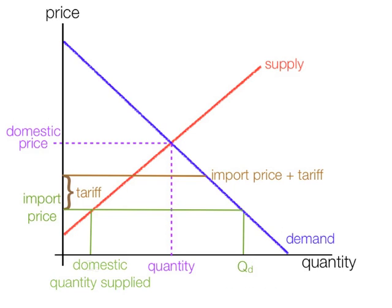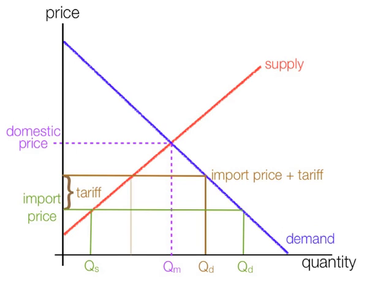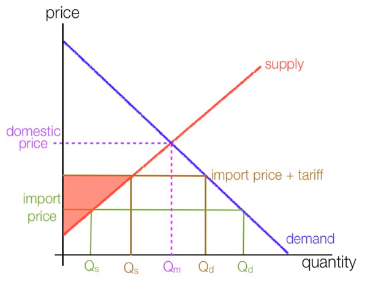I'm going to pick that quantity demanded QD and quantity supplied QS. The import price with the tariff gives a new quantity demanded and a new quantity supplied. Initially, that's the producer surplus before imports. After imports it falls dramatically, and the tariff causes producer surplus to rise — which is exactly what the government wanted; producers benefit.